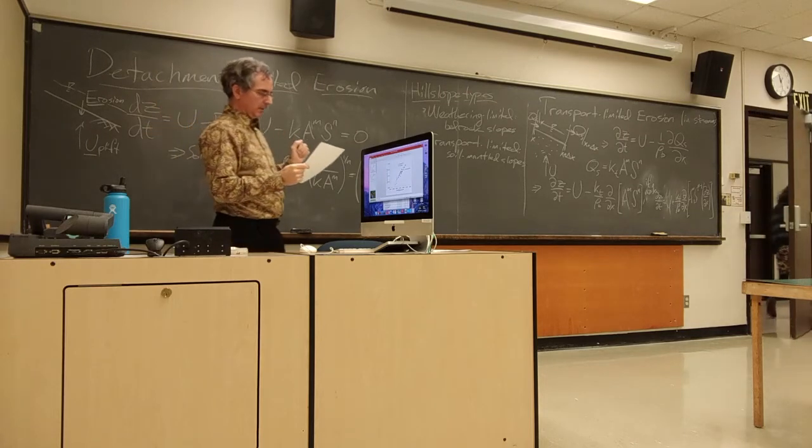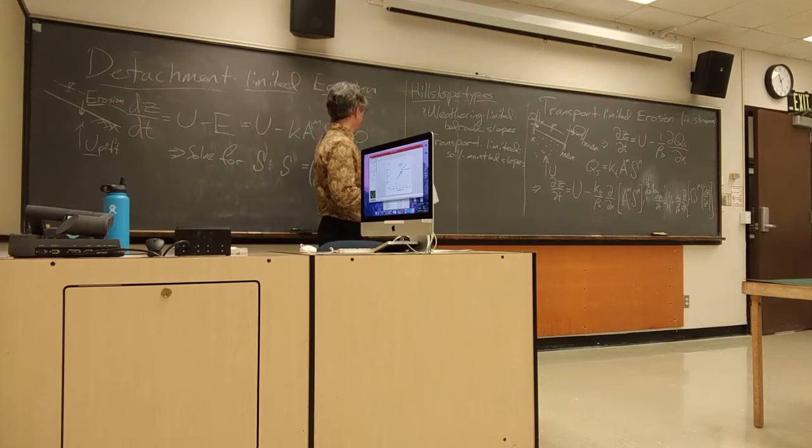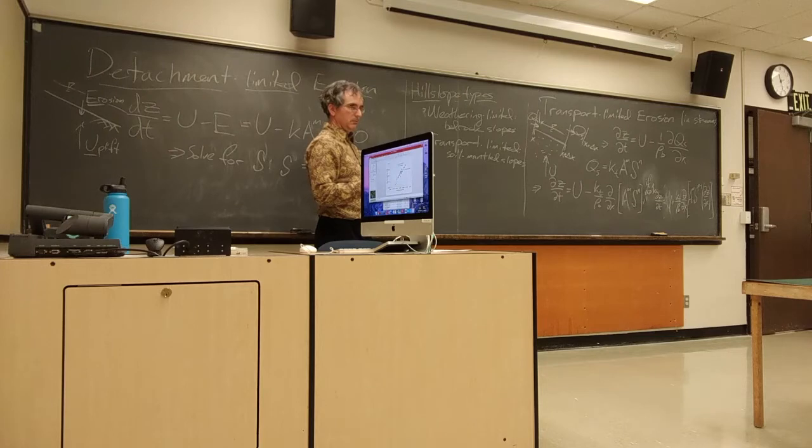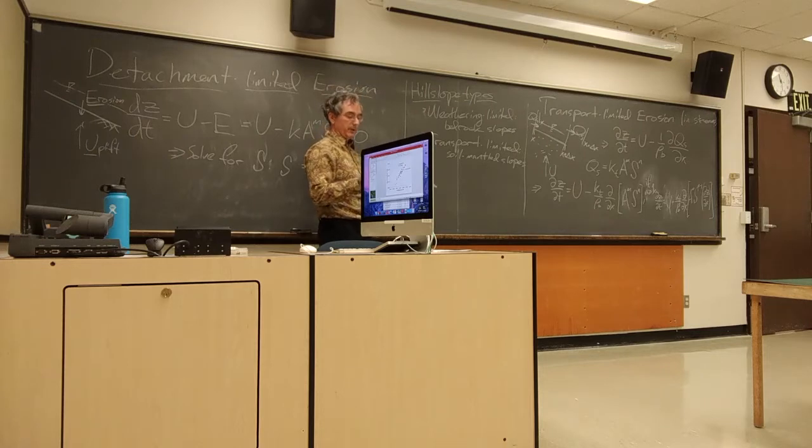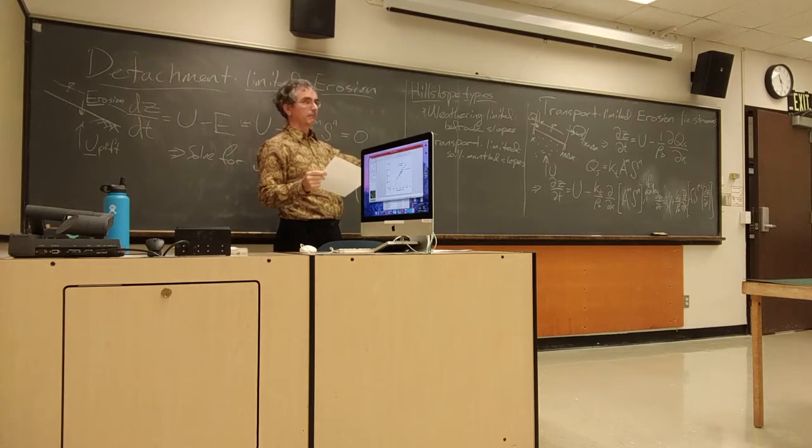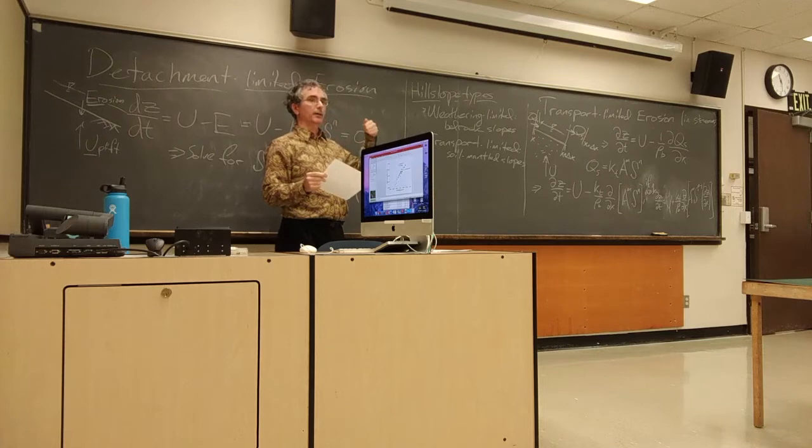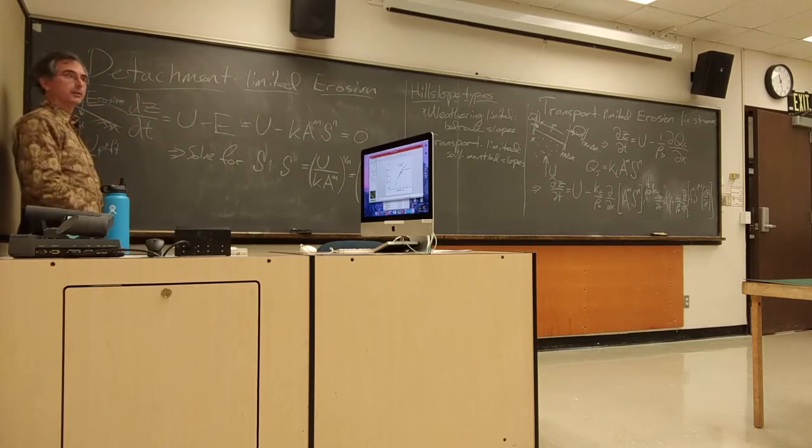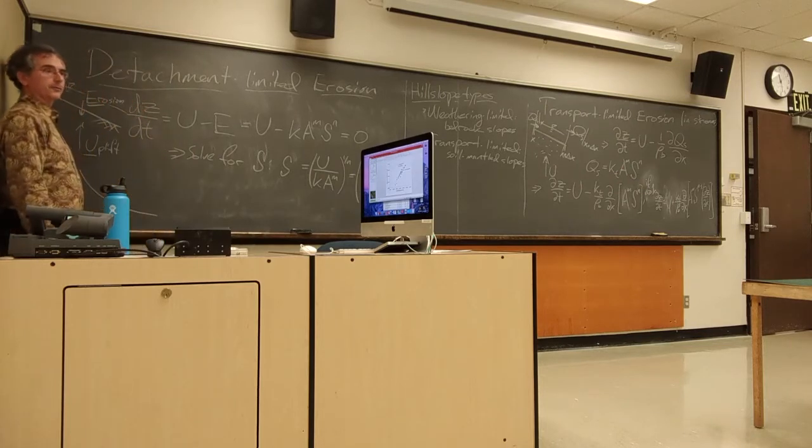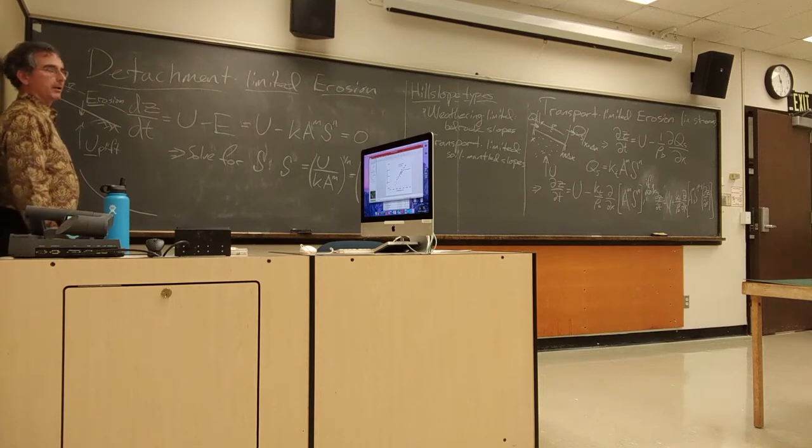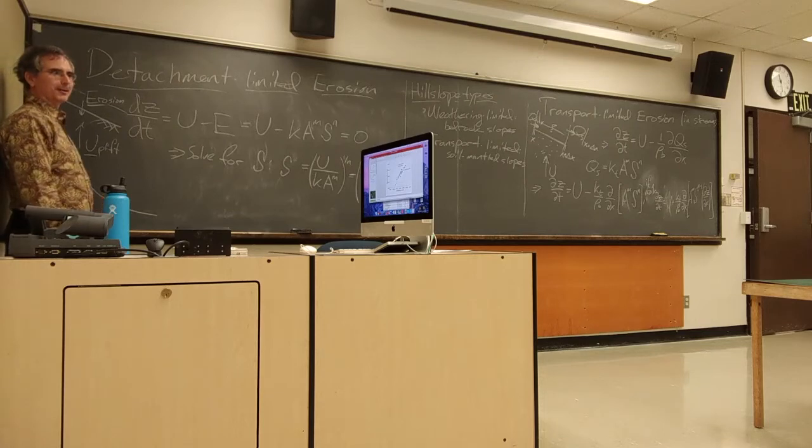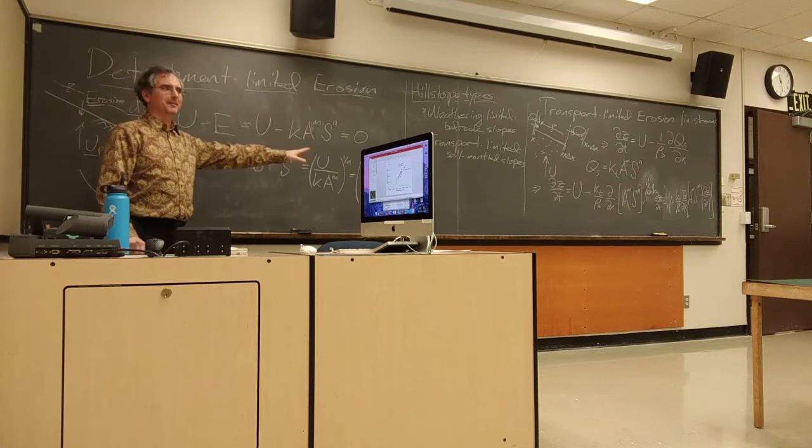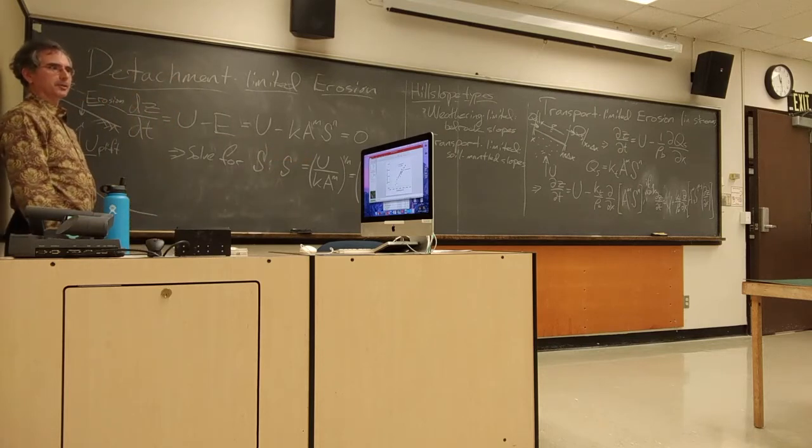This says that if m and n are both greater than zero, then you should expect that detachment-limited streams will tend toward having slopes or stream gradients decrease with increasing contributing area. And contributing area increases downstream, so that is, slopes will decrease as we go downstream. And that's consistent with at least our most basic notion of what a stream profile ought to look like. If I'm going to draw a stream profile sort of writ large, I'm going to pretty much almost always draw it like that. And, while that's me wanting to draw a concave profile like that isn't any kind of proof of this, this at least is consistent with our intuition for how stream profiles should be shaped.